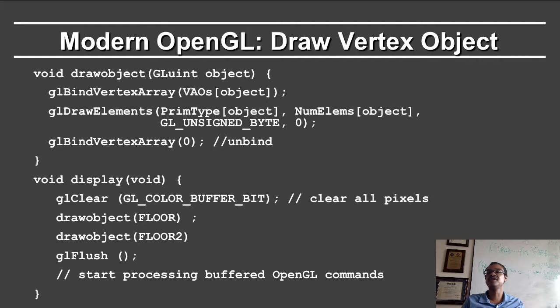In the display routine, you have this command glClear, GL_COLOR_BUFFER_BIT, which clears all of the pixels. Thereafter, you draw the object floor, draw the object floor 2, and you flush and start processing the buffered OpenGL commands.